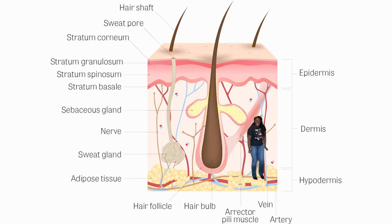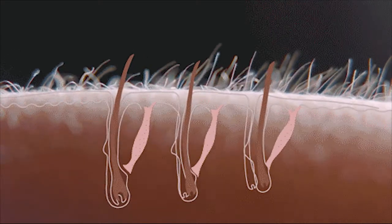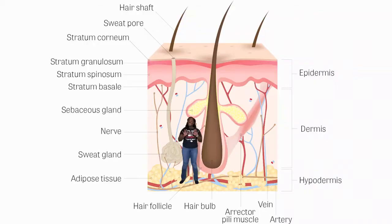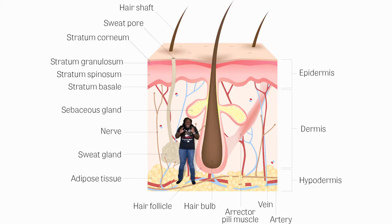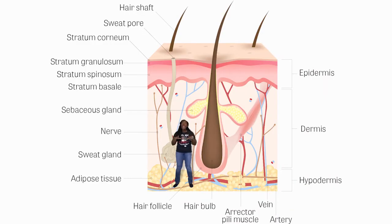The erector pili muscle is a small muscle attached to the hair follicle. When it's cold, your body tries to generate heat, so all of your erector pili muscles contract at once, causing the hair to stand up straight — this is known as goosebumps. Another exocrine gland in the dermis is the sebaceous gland, which is attached to the hair follicle. Unlike the sweat gland, the sebaceous gland secretes an oily substance known as sebum, which lubricates your hair and skin. Acne or sebaceous hyperplasia is usually caused by overactive sebaceous glands producing excess sebum.